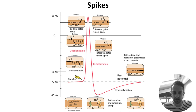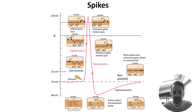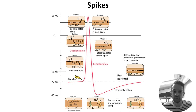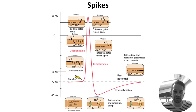At high voltages, sodium channels close, but potassium channels open, and potassium flows out of the neuron, reducing the membrane potential. This is called repolarization. Interestingly, repolarization typically goes below the resting membrane potential, here going as low as minus 90 millivolts. This is called hyperpolarization, and its effect is to effectively raise the threshold for new stimuli to trigger a spike for a period of time, which we term the refractory period.